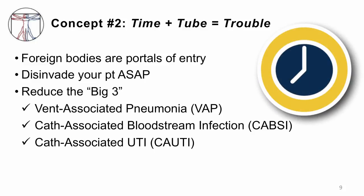Concept number two: time plus tube equals trouble. There are so many foreign bodies that come into and out of our patients — every one of them is a portal of entry for infection. You name the body cavity, we've got a tube for it: endotracheal tubes, central venous catheters, Foley catheters into the patient's bladder. They make things easier for us, but they're also a portal of entry for bacteria. Have a checklist. Ask yourself: does this patient need this tube for this indication today, or can we get it out? The big three — vent-associated pneumonia, catheter-associated bloodstream infection, catheter-associated UTI — are all dramatically reduced by reducing the dwell time of those foreign bodies.